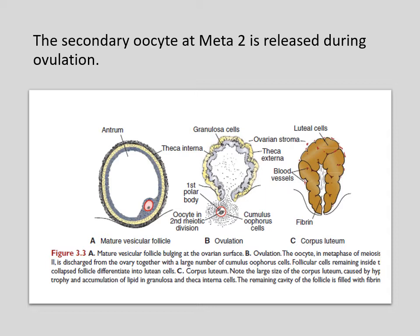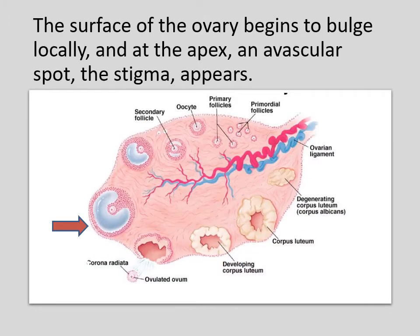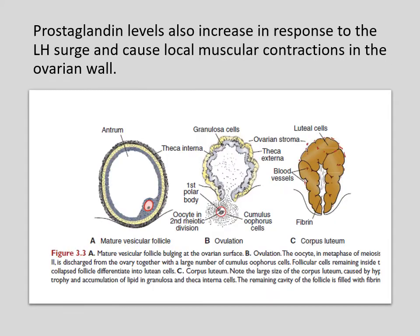Please take note that the oocyte will become arrested in metaphase 2 approximately 3 hours before ovulation. The surface of the ovary begins to bulge locally, and at the apex, an avascular spot called the stigma appears. The high concentration of LH increases collagenase activity, resulting in digestion of collagen fibers surrounding the follicle. The prostaglandin levels also increase in response to the LH surge and will cause local muscular contractions in the ovarian walls, which extrude the oocyte.